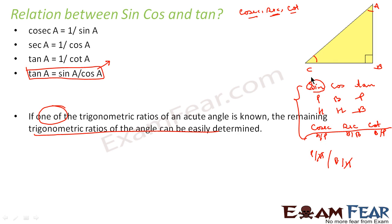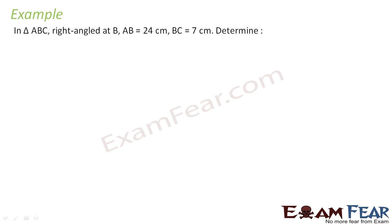You should know sin, cos, tan using 'Pandit Badri Prashad Hare Hare.' Sin is 1 by cosec, cos is 1 by sec, and tan is 1 by cot. Now let's take an example. ABC is a right triangle with the right angle at B. AB is equal to 24, BC is equal to 7. We need to determine sin A and cos A. Let us draw this triangle first.